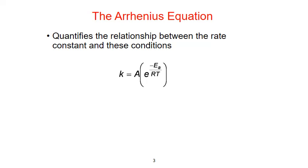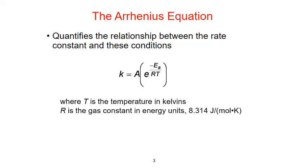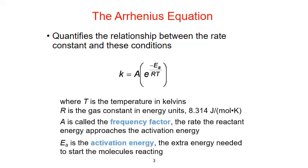We can quantify the relationship between these conditions and the rate constant using the Arrhenius equation. Here, k is defined as the product of a frequency factor, A, times an exponential factor that is the constant e raised to the power of the activation energy of the reaction divided by the ideal gas constant and the temperature in Kelvin.